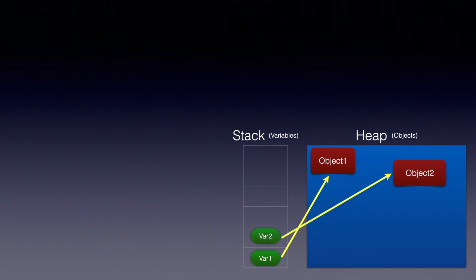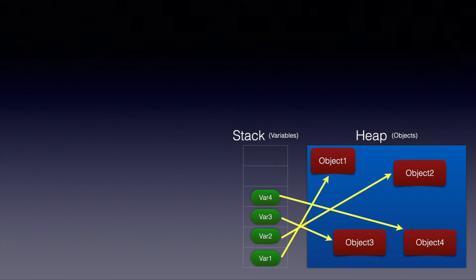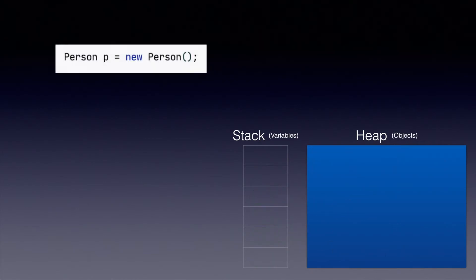Similarly, as we create more objects, we need more variables to refer to them. Every variable in this diagram points to an object, and we can use that variable to access it. Now let's see the example of the code we have written — this one line where we said person p equals new person. A lot of things go on behind the scene.